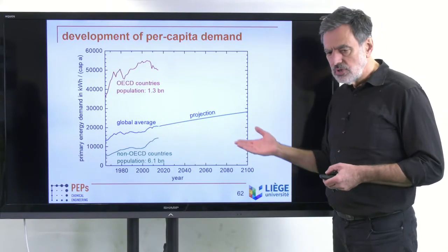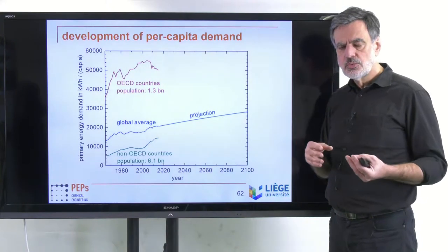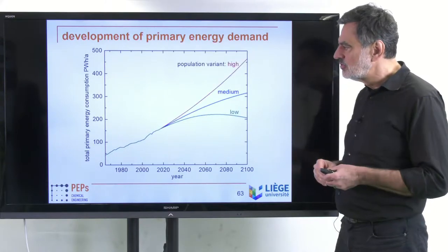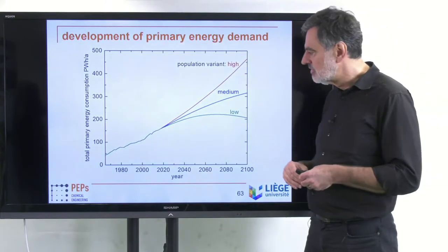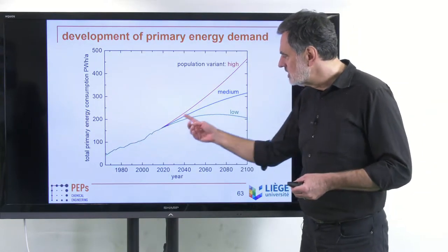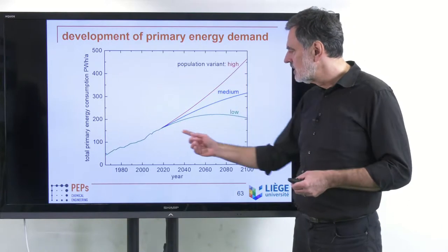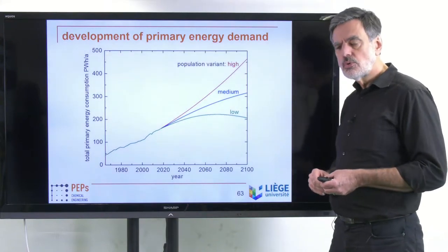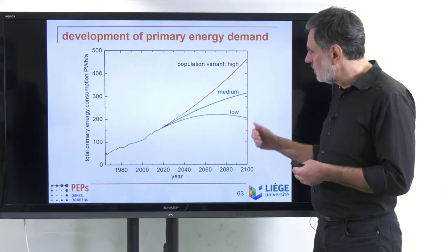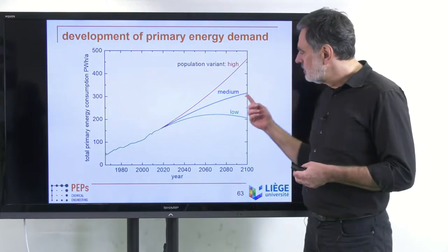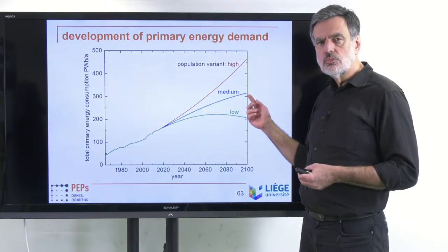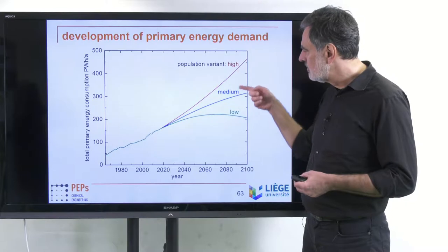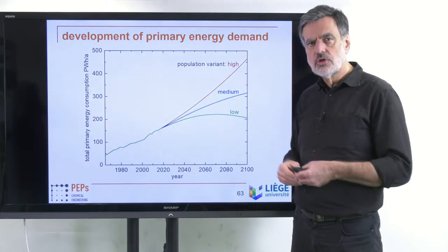From the population development worked out in the corresponding video on world population, together with this per capita consumption, the overall primary energy consumption can be projected. Using the high, medium, and low population variants from the most recent UN world population prospects, we see how total energy demand evolves. Typically people use the medium variant, but as I argue in the world population video, we should take the high variant into account as well. So I will use these two variants in my further studies.